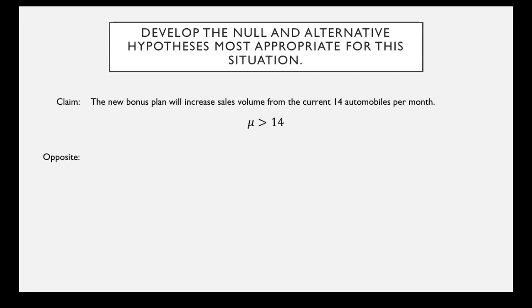The opposite of our claim is that the sales volume will stay at 14 automobiles per month or decrease under this new plan. We can show that as μ ≤ 14.